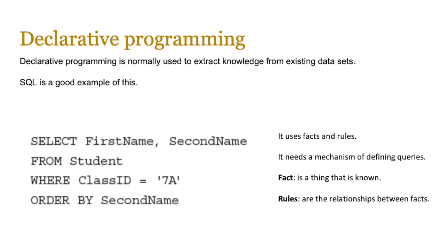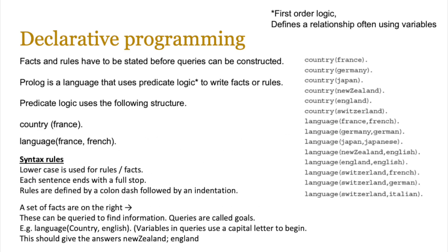All we need is a mechanism to define queries. Because we know what the facts are, what's in there, and how these different objects relate to each other — what their relationship is — we can search for things and get answers. For declarative programming languages to be effective, facts and rules have to be stated before queries can be constructed. For example, you can't really search for something if it doesn't exist or there's no relationship between different facts.